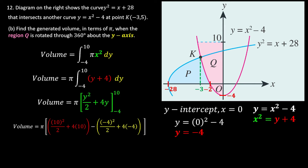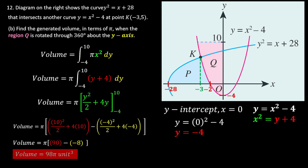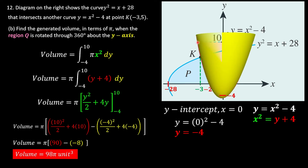Substituting the upper limit (y = 0... corrected to the given boundary) and lower limit y = -4, after calculation we get 90 - (-8) = 98. The volume is 98π unit³. This forms a cone shape rotating around the y-axis.